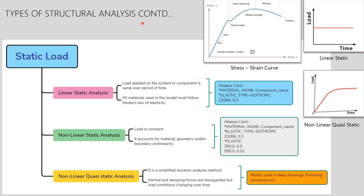Continuing with static loading types: in linear static analysis, the load applied on the system or component is the same over a period of time, and all materials must follow Hooke's law of elasticity. As you can see in the graph, the load applied on the structure is constant over time. In the Abaqus card for reference, only elastic material properties — Young's modulus and Poisson's ratio — are used. This means whatever load is applied, once removed, the structure returns to its original position.